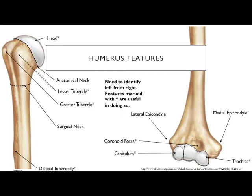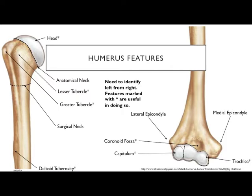On the posterior side of the humerus we have the olecranon fossa — the olecranon process of the ulna fits into this on the posterior side.